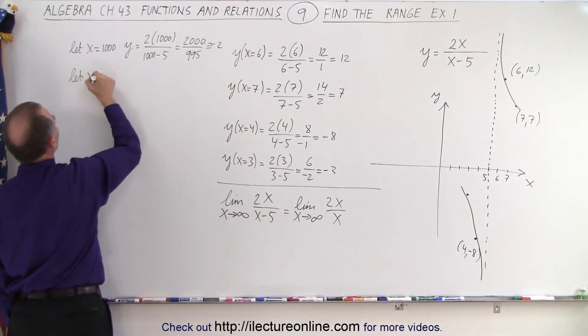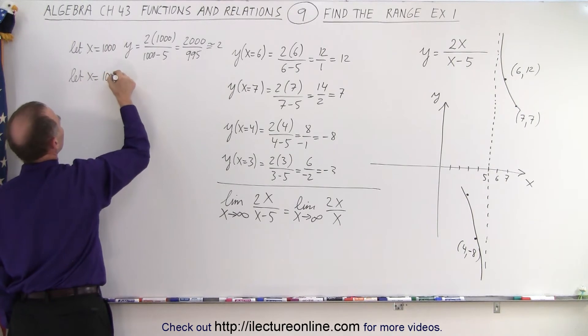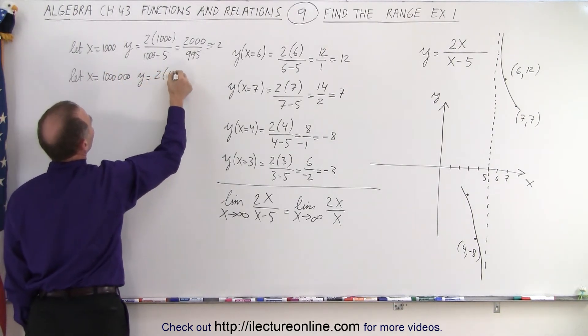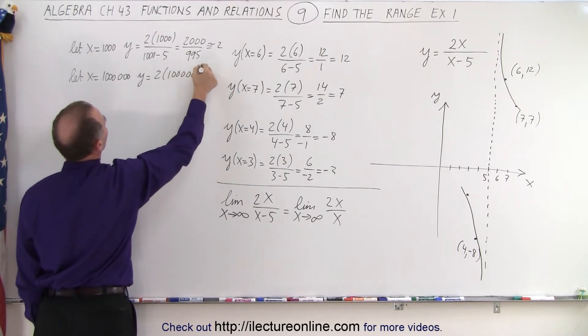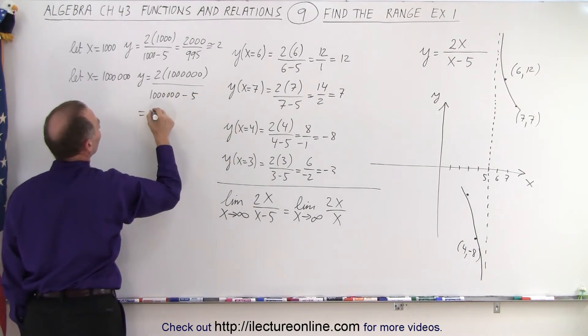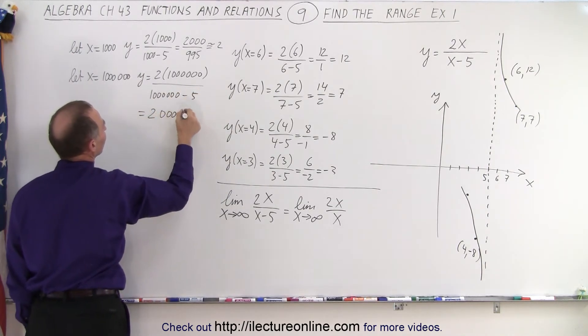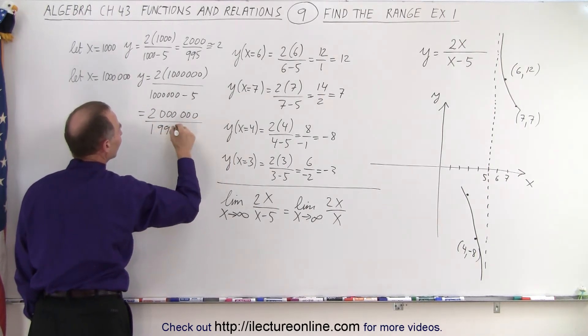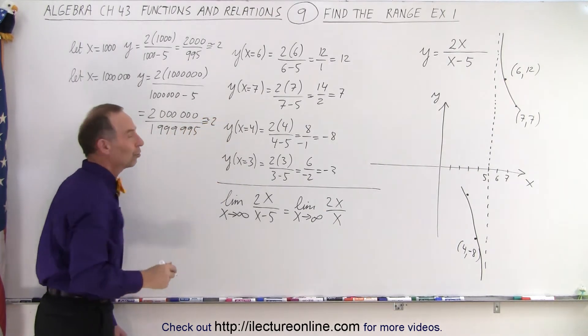And then if we let x equal 1,000,000, we get y is equal to 2 times 1,000,000 divided by 1,000,000 minus 5, which is 2,000,000 divided by 999,995, which means that this is just about equal to 2.